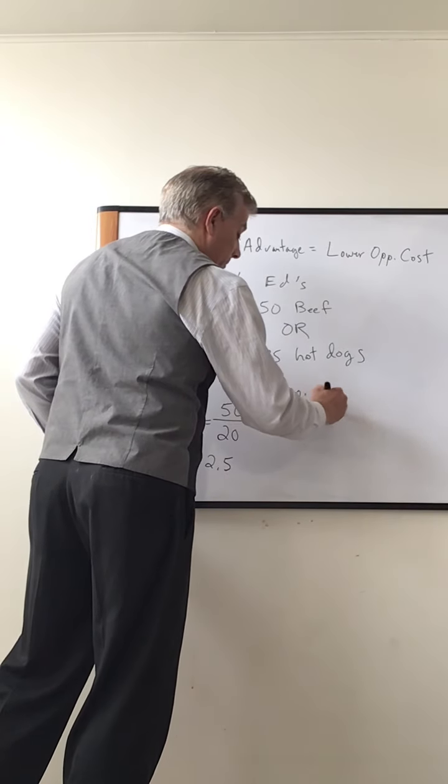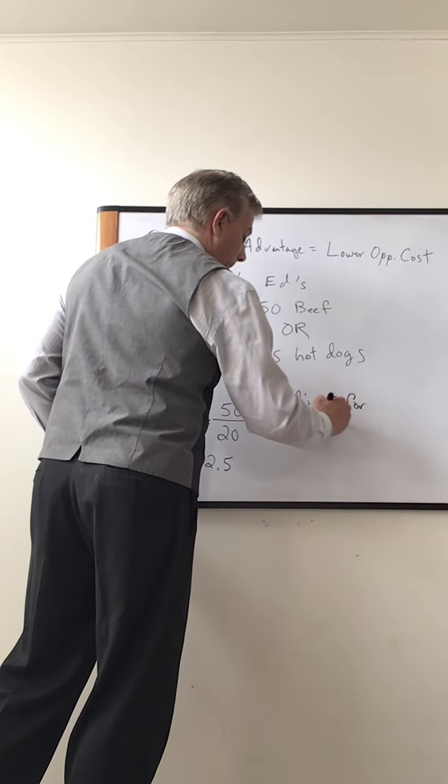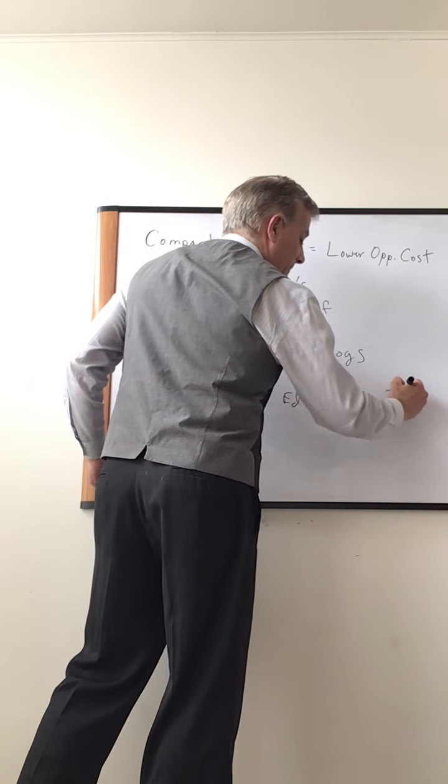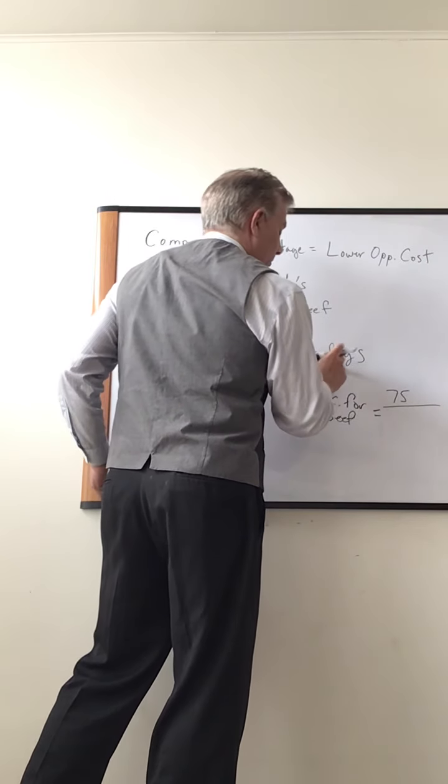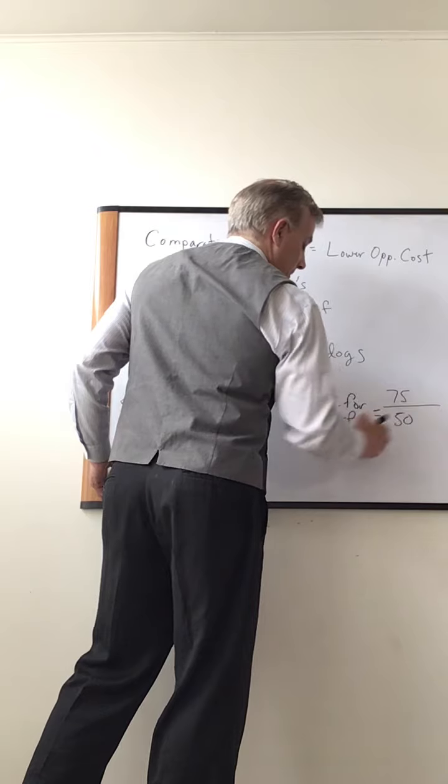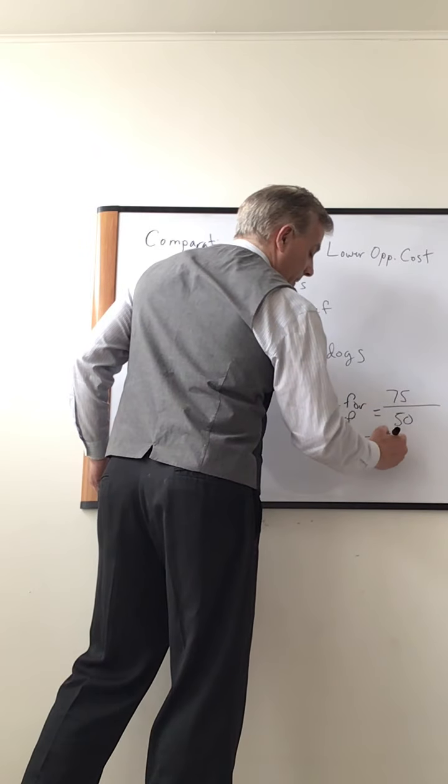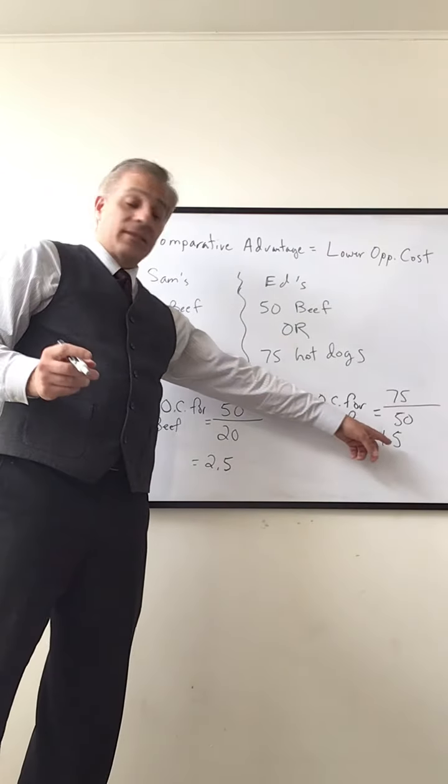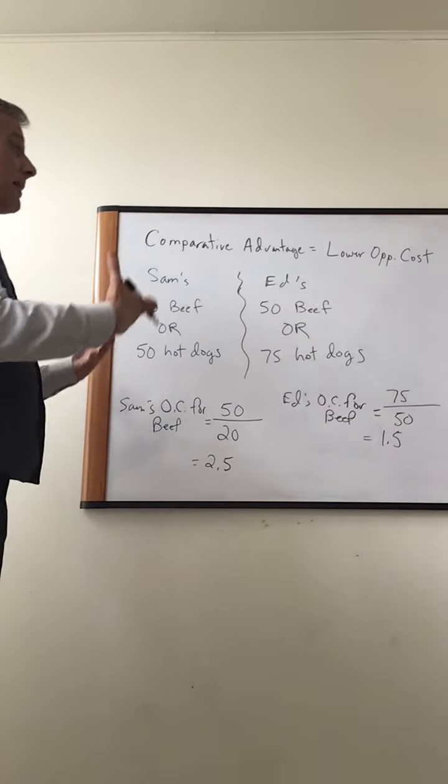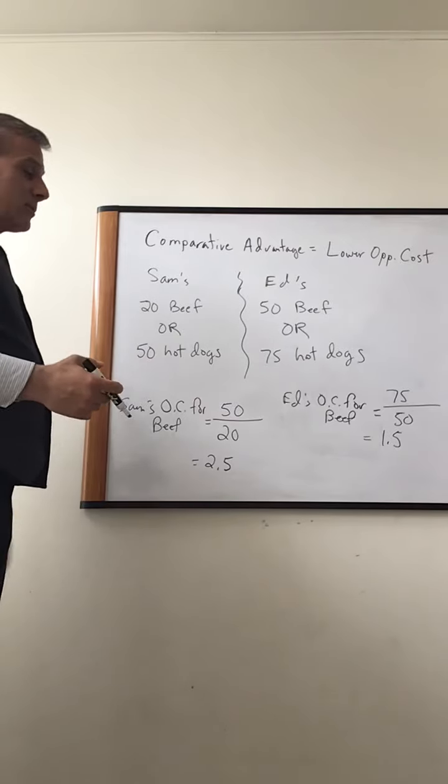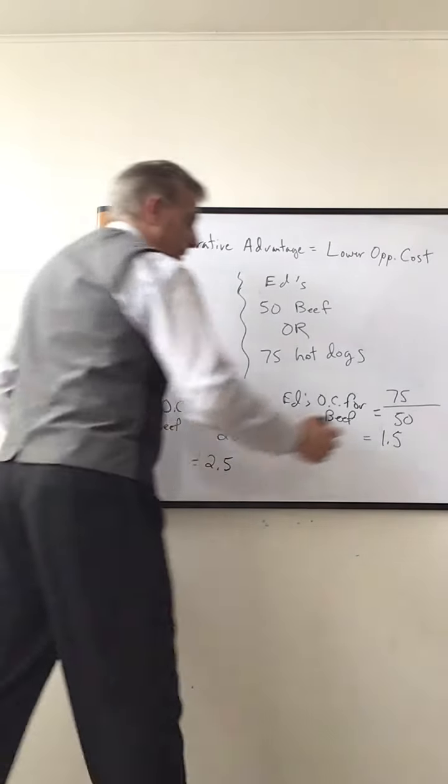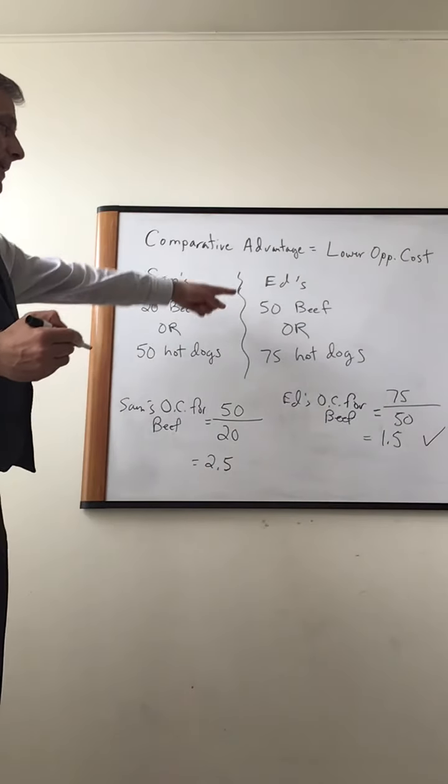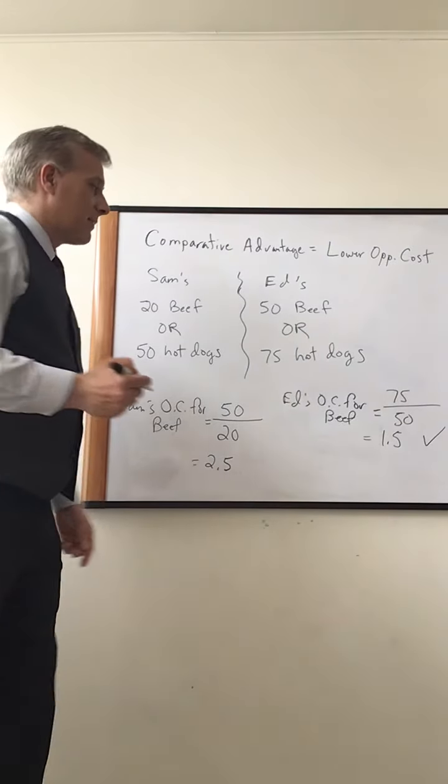Ed's opportunity cost for beef equals 75 hot dogs, which we're not doing, over the 50 beef sandwiches, which is 1.5 hot dogs. Opportunity cost for each beef sandwich is 1.5 hot dogs. Now, remember, comparative advantage goes to the lower opportunity cost. So bingo, Ed has comparative advantage for beef.